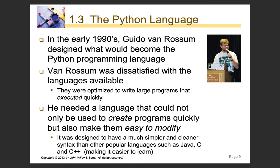In the early 1990s, Guido Van Rossum designed what would become the Python programming language. He was dissatisfied with the languages available — they were optimized to write large programs that executed quickly, but he wanted a language that could not only create programs quickly, but also allow easy modification. Python was designed to have a much simpler and cleaner syntax than other popular programming languages such as Java, C, and C++, making it easier to learn. Syntax here means the language of instructions that Python uses.